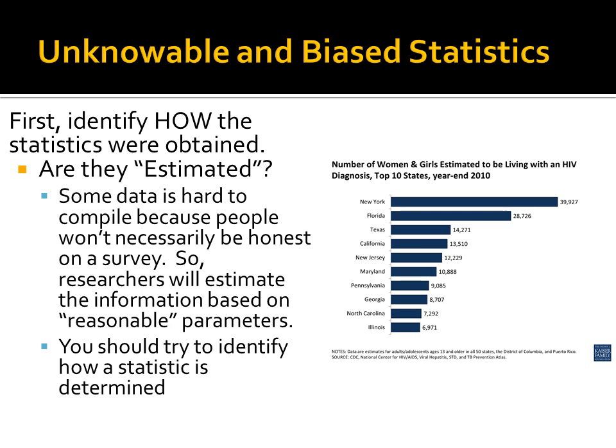The first thing we need to do is identify how the statistics were obtained — this is absolutely the most vital part. We need to know: were the statistics estimated or based on hard numbers? Even if something is estimated, it is not necessarily invalid. Some data is hard to compile because people won't necessarily be honest, so researchers will estimate the information based on reasonable parameters.